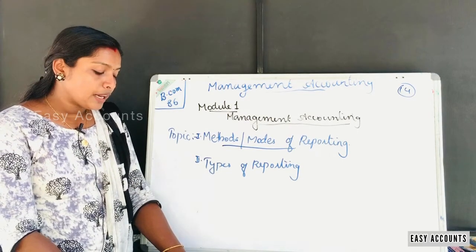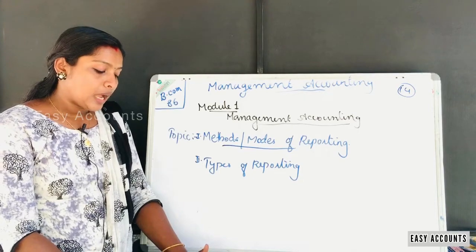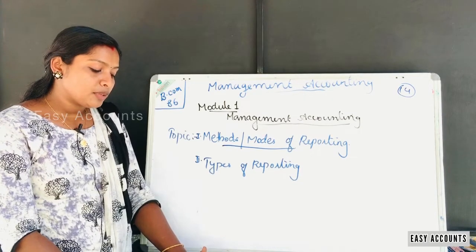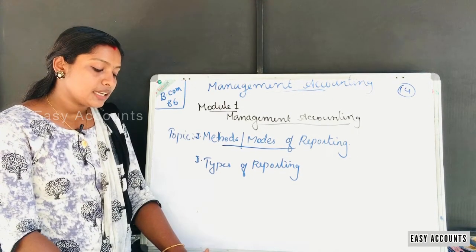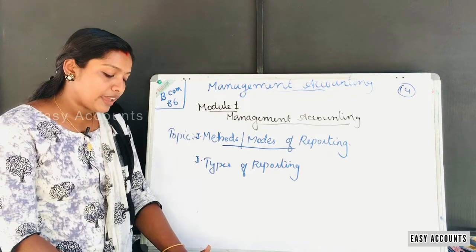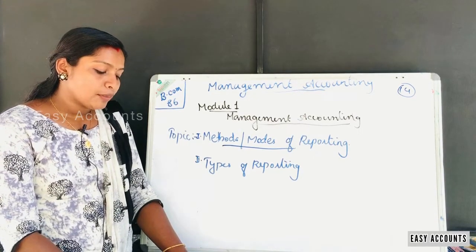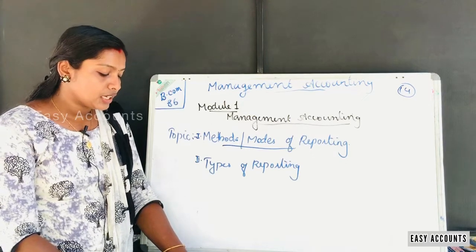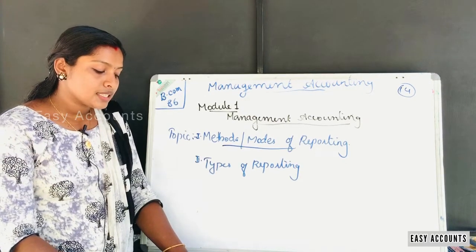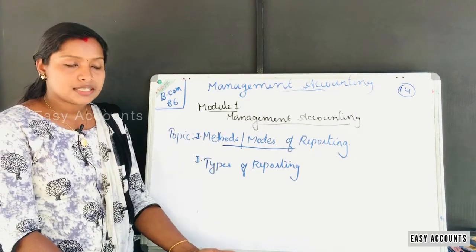The second method is tabulated statistics. This statement may deal with statistical analysis of a particular type of expenditure over a period of time, or sale of a product over a period in different regions. That is one form of written statement.